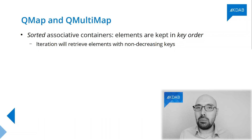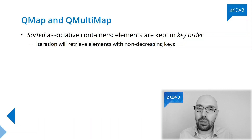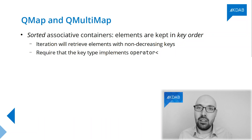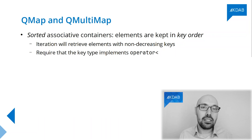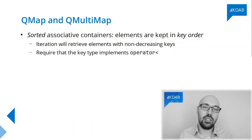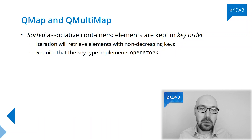How does Qt know how to keep the order of given keys? The keys inside a QMap must implement operator less-than. That's a given if you're using things like integers or strings, but even if you have a custom key type, you can always implement operator less-than between two instances of your key type, and once you do that, you will be able to use your custom key type as a key inside a QMap.